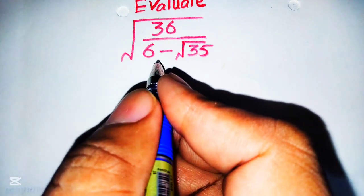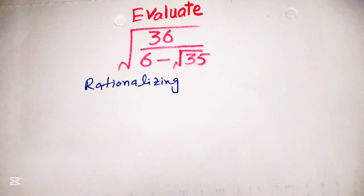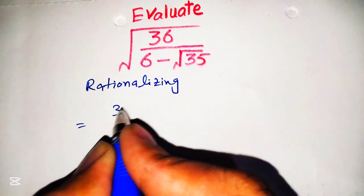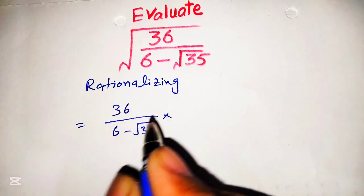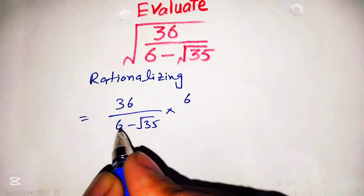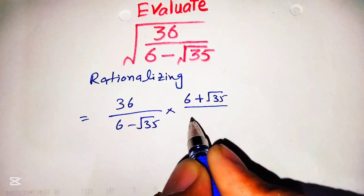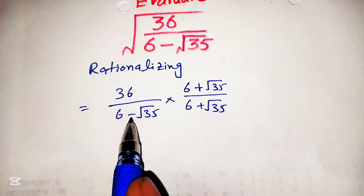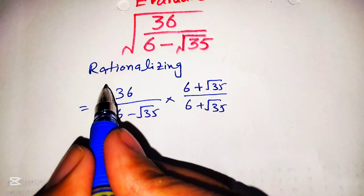To solve this, we will first rationalize the denominator of this given equation. For this, we will multiply and divide by the conjugate of the denominator, changing the sign: 6 plus square root of 35 over 6 minus square root of 35 times 6 plus square root of 35.